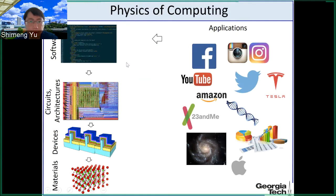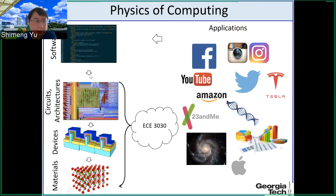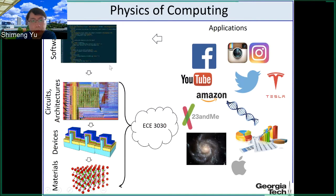3030 is going to cover the bottom part of the stack, from the silicon material to the building block — the transistor — and then to simple circuits like the inverter. Those are the foundations for the software you are running on top of that.